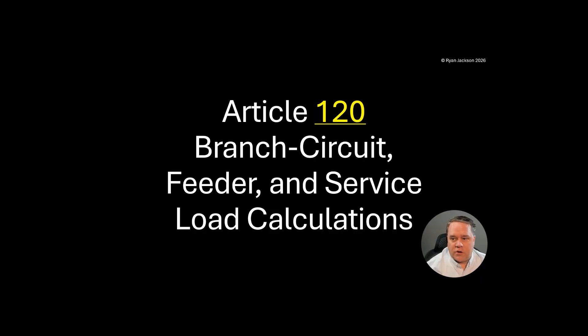So in 2020 they tackled non-residential, reducing the lighting load significantly. When's the last time you installed a 400 watt metal halide? And we're certainly not installing 60 and 75 watt incandescent lamps anymore. So it was high time to reduce those load calculations. They did that for 2020, didn't do much for 2023, but for the 2026 code we went through and addressed dwelling units.